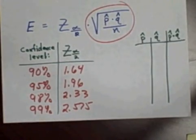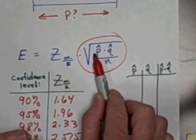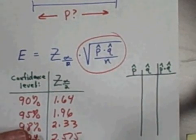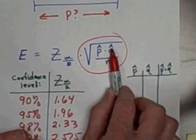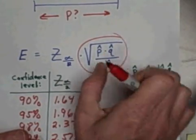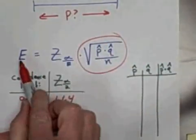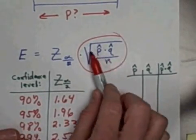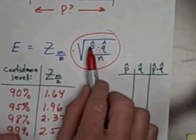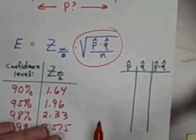All right, what else can affect my margin of error? Well, this product right here, the product of P-hat and its complement Q-hat. These two numbers multiplied together are the numerator. So, as this product gets bigger, that makes this square root get bigger. What makes this whole value get bigger, which, of course, makes my margin of error bigger?